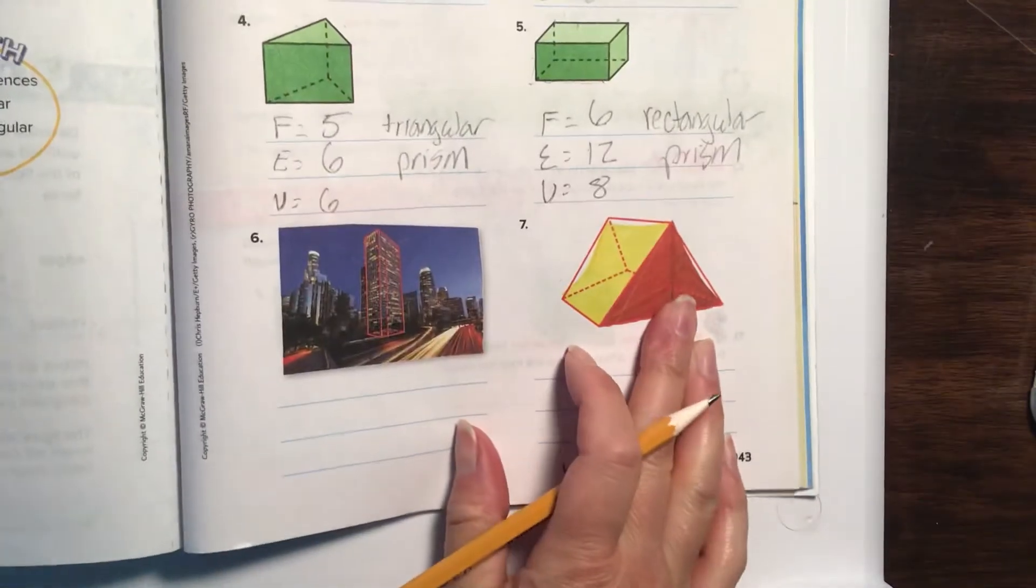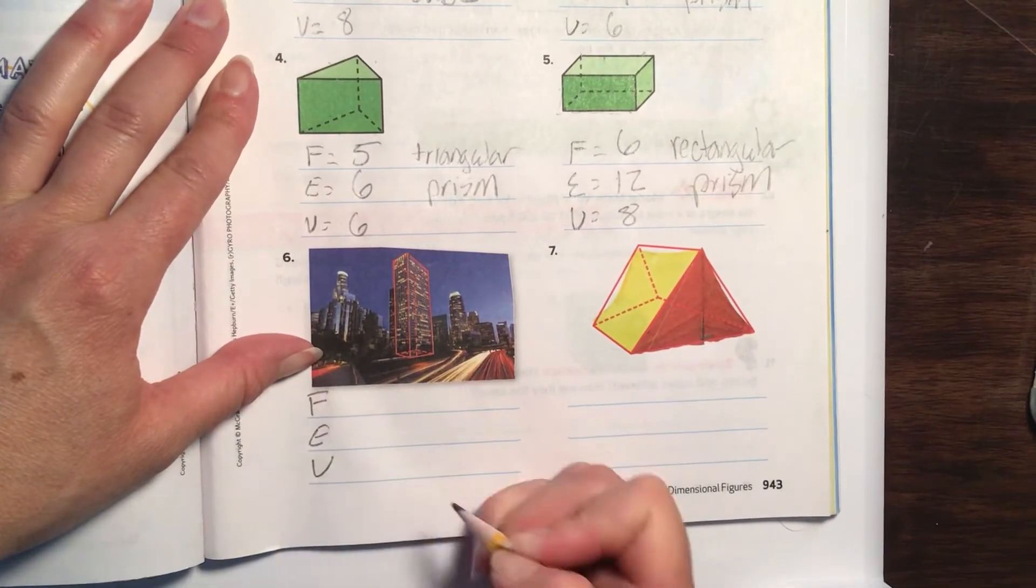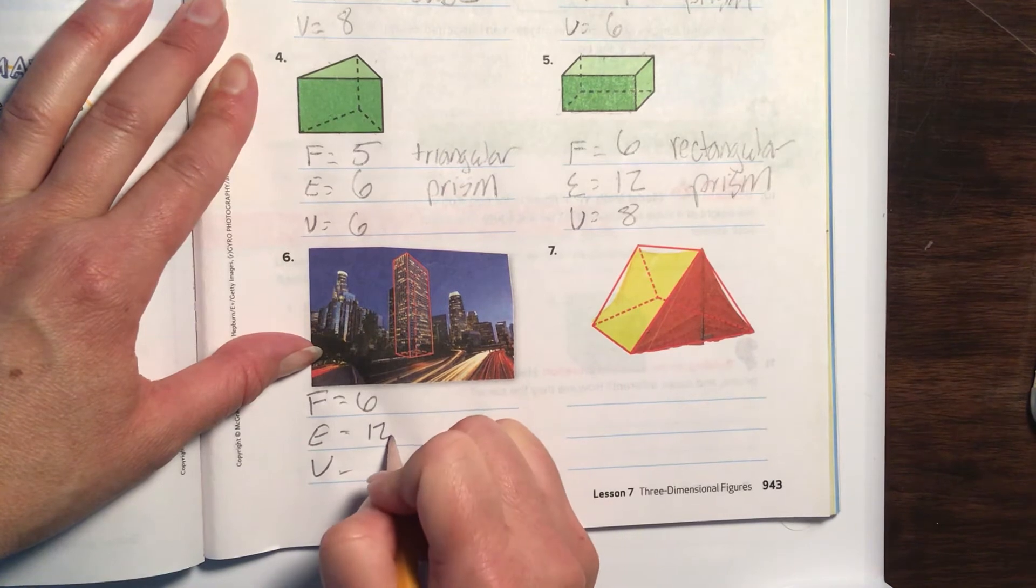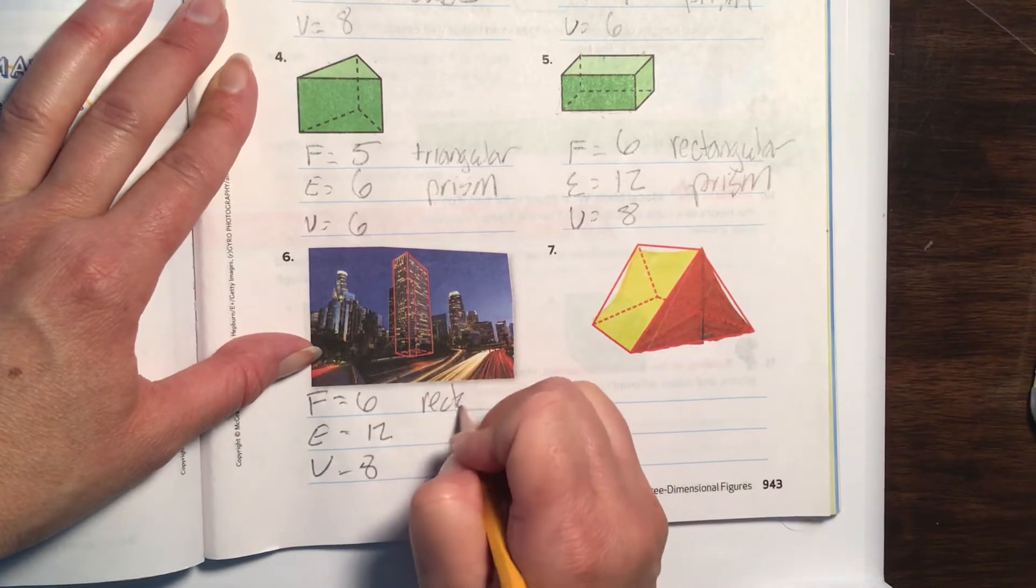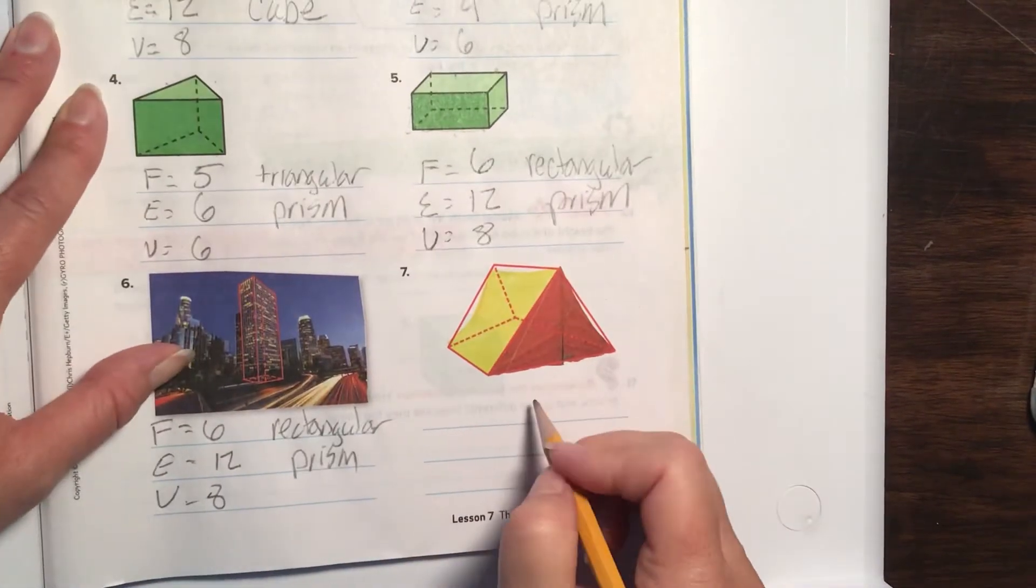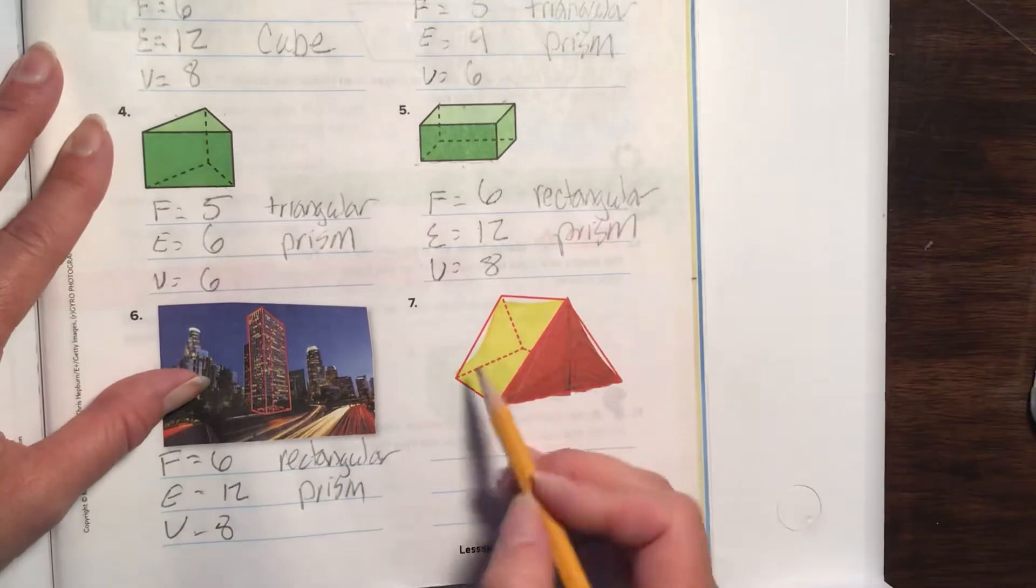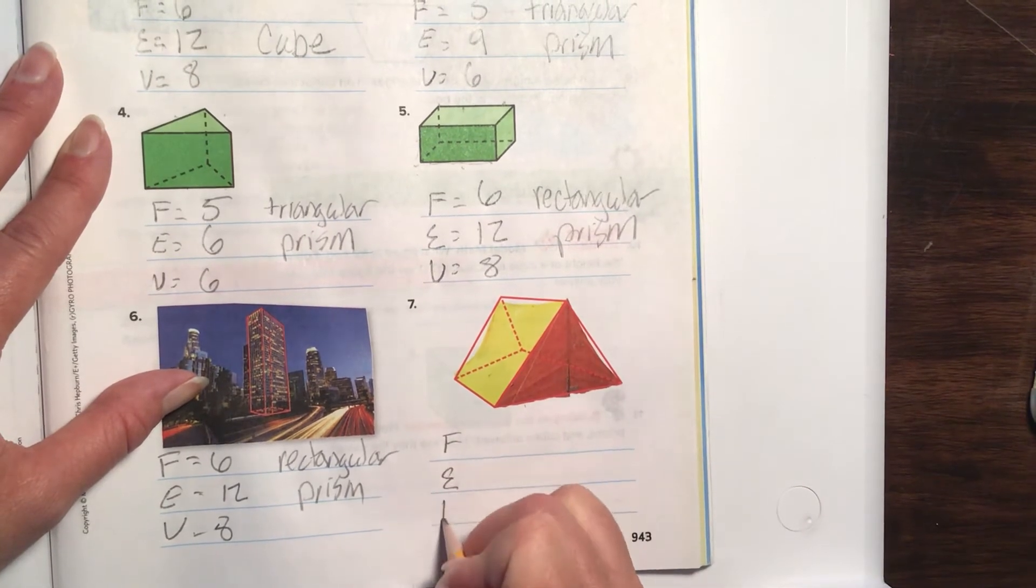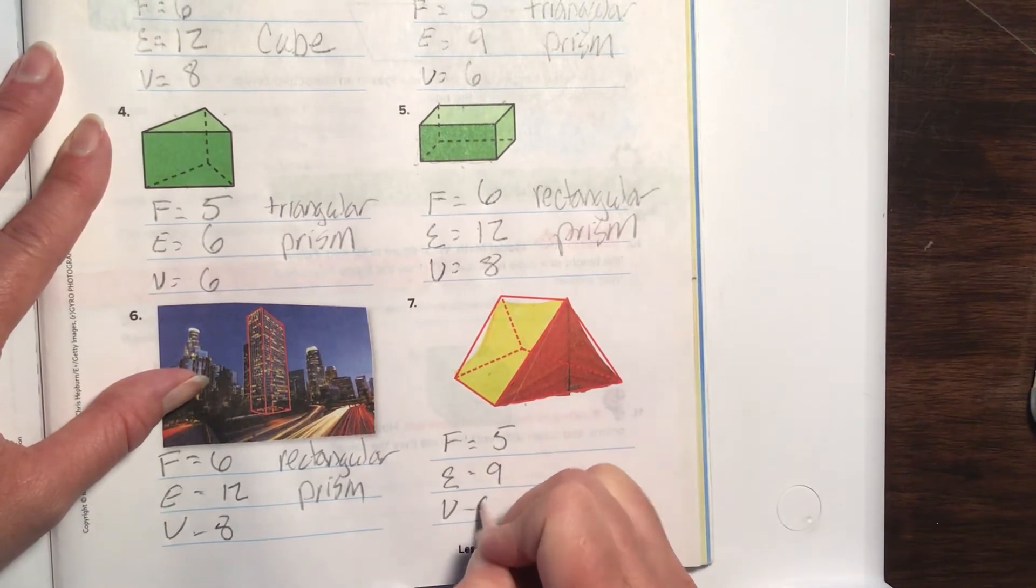Fabulous. Okay, now we're working on number six. What is this one? This building has—we're going to do faces, edges, and vertices. Faces: it has six faces, twelve edges, and eight vertices. And that is still a rectangular prism like this one. And this beauty right here, this tent, is very similar to this right here. So I bet it's going to be a triangular prism. Let's count the faces: one face to the front—two, three, four, five. Faces, edges, and vertices: five faces, nine edges, and six vertices—triangular prism.